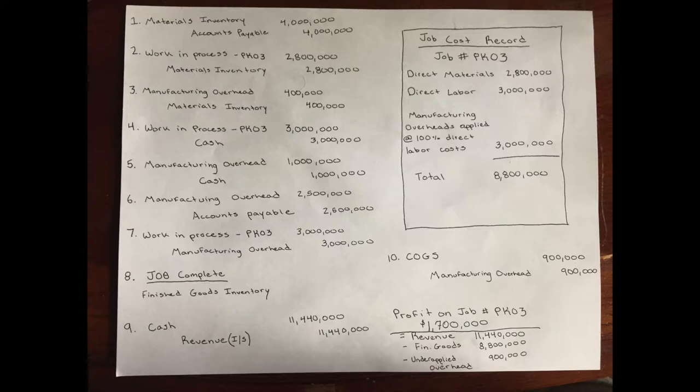For number three, $400,000 worth of manufacturing raw materials are used as indirect materials. Therefore, manufacturing overheads are debited for $400,000 and inventories are credited for $400,000.